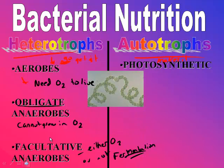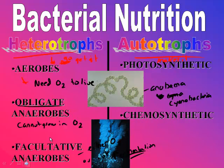For autotrophs, the two types we know: photosynthetic — this is called Anabaena, a photosynthetic cyanobacterium that uses photosynthesis to attain its own food. And then chemosynthesis: these are bacteria found at hydrothermal vents deep under the sea, releasing energy and sulfur-based chemicals. The bacteria use those sulfur-based chemicals to produce their own energy.